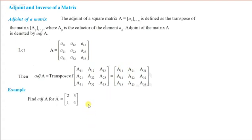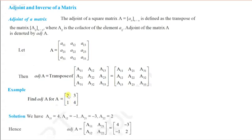Example: suppose we have a square matrix of order 2 with elements 2, 3, 1, 4. The cofactor A11 corresponds to element 2 in the first row, first column. Removing that row and column, we are left with 4, so A11 = 4.